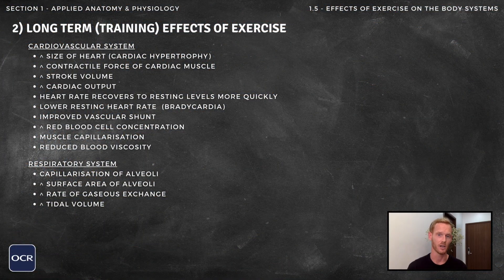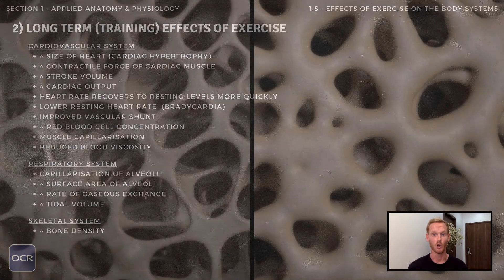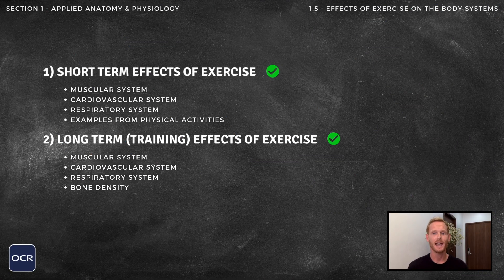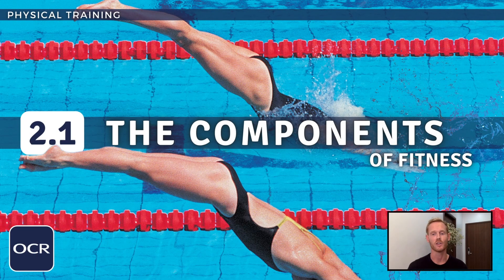One final adaptation relates to the skeletal system: an increase in bone density. Load-bearing activities like running or weight training put stress on the bones, which adapt to become more dense and resistant to injury. That covers everything you need to know on topic 1.5, the effects of exercise on the body systems. See you next time for topic 2.1 on the components of fitness.